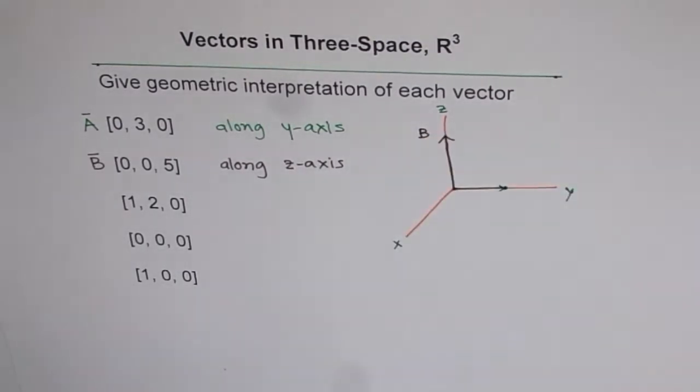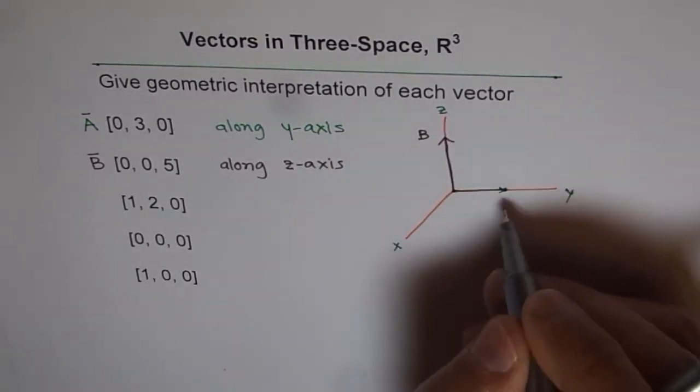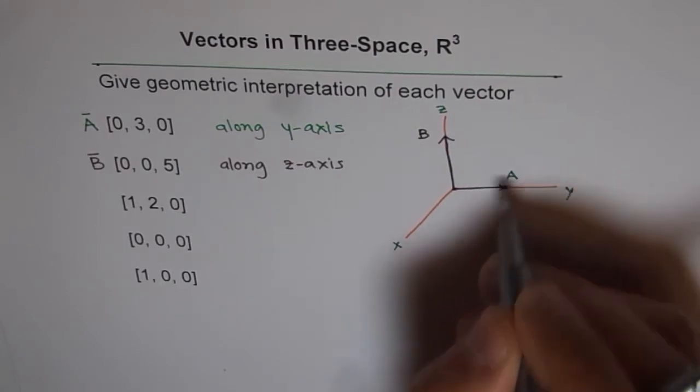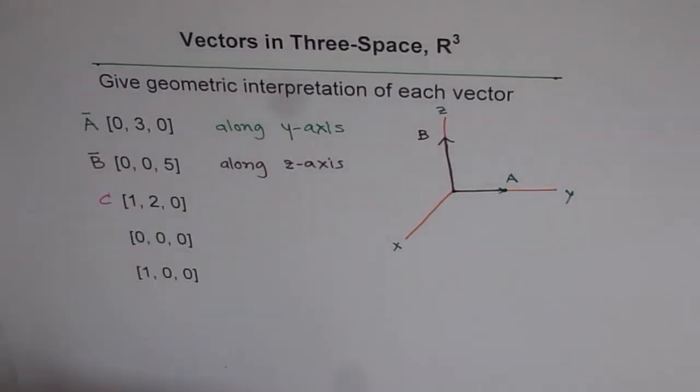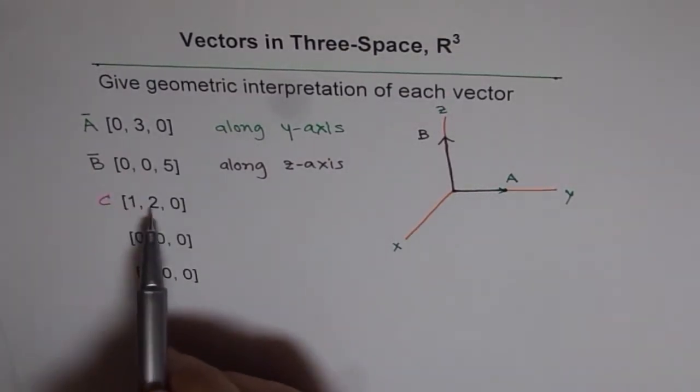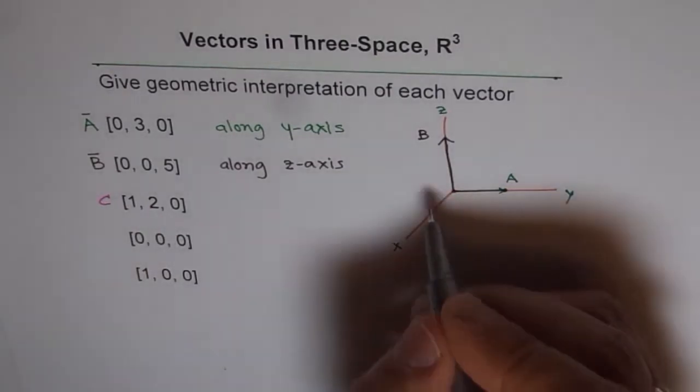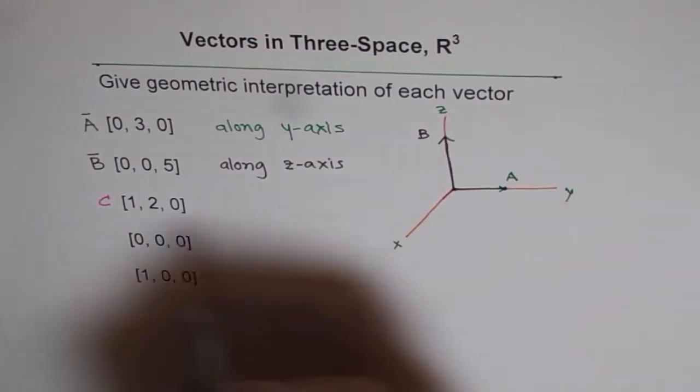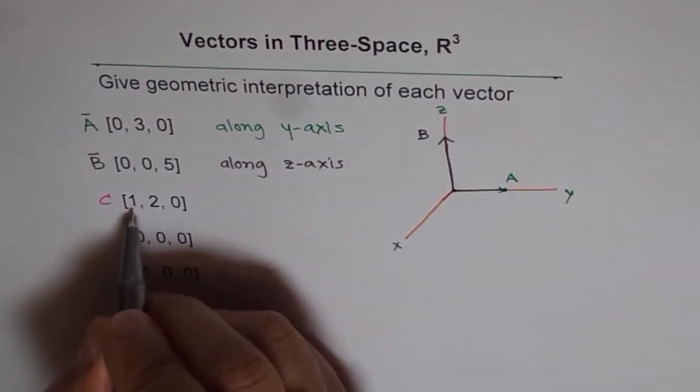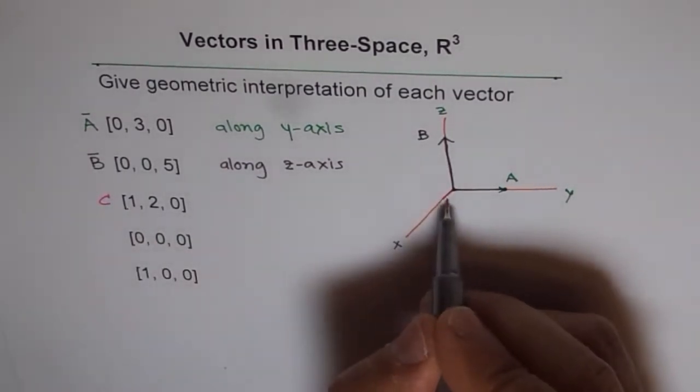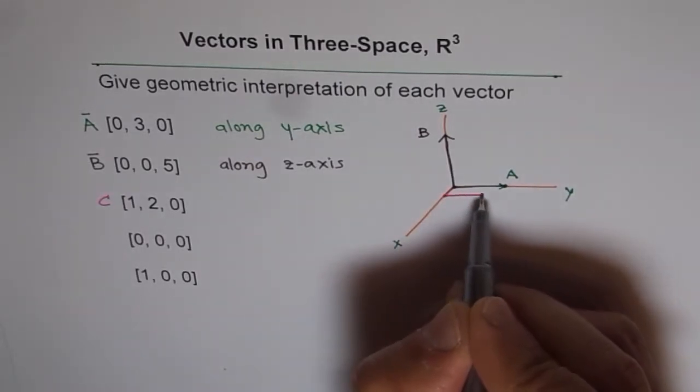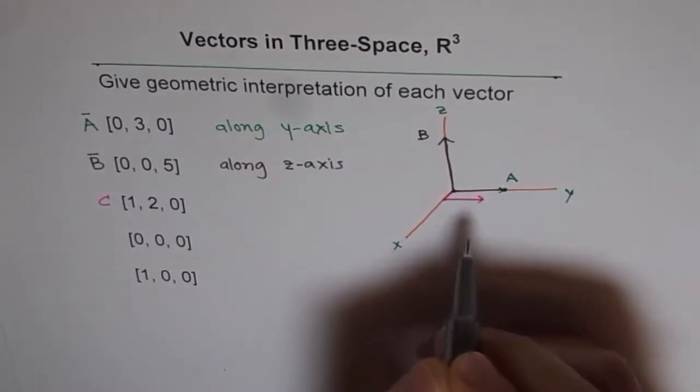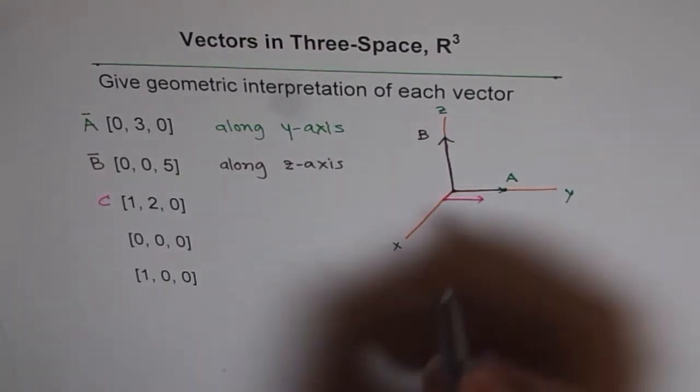Let's look into the next one, let's call it vector C. So vector C is (1, 2, 0), that means we will move one unit towards x-axis, along the x-axis, and two units...